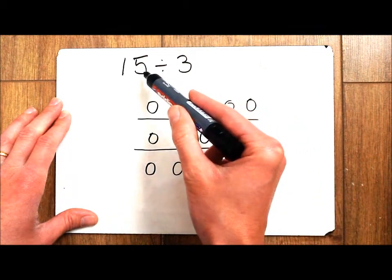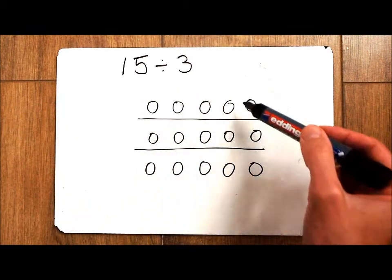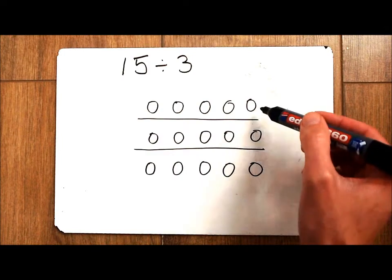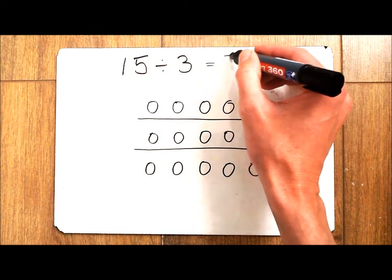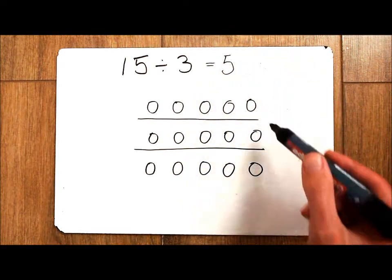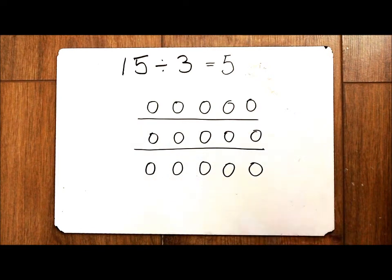I've now shared out my 15 things among my 3 groups. In each of my groups, I've got one, two, three, four, five. So 15 divided by 3 is 5, and here is my array to show that.